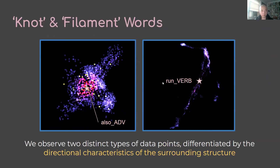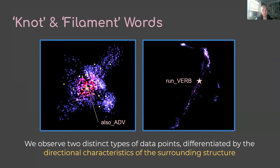We have divided the structure into two different elements. One element is what we call knots, or clusters. In knots, the words are placed closer together in a way that doesn't have any directionality — it's just a block, a cluster. As you can see on the left side, the word 'also' is positioned inside a cluster and how it spreads out does not have any sense of directionality. On the right side, you have something distinctly different: the word 'run' is positioned inside a filament, like a row that tries to connect the clusters together.